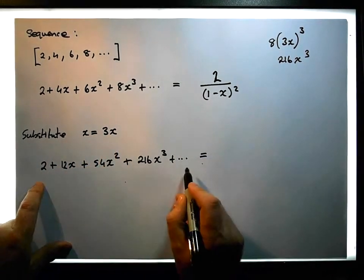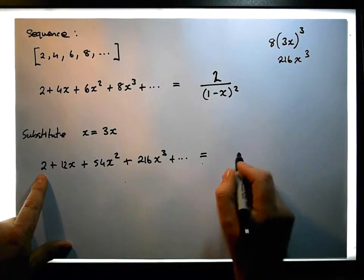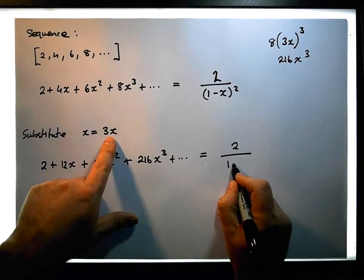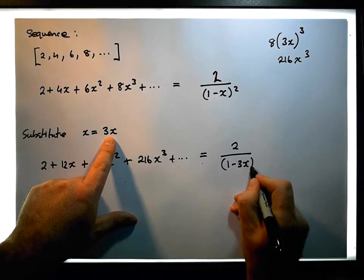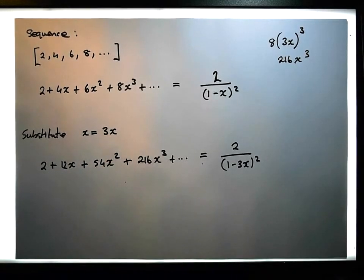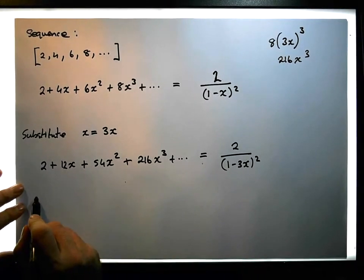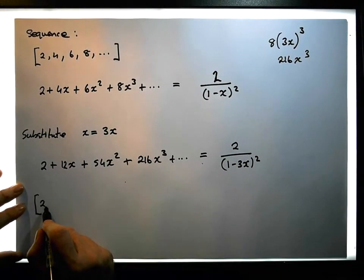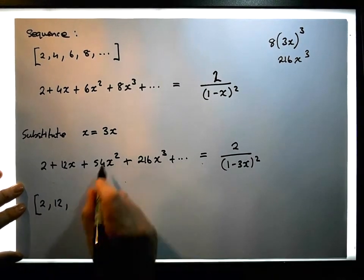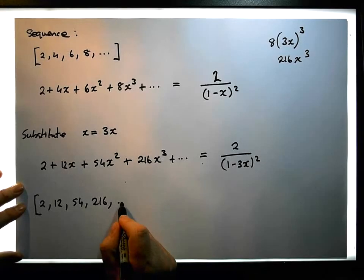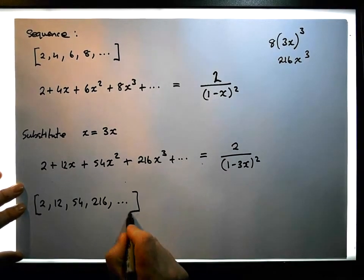So the generating function for this particular power series is effectively 2/(1-3x)². The sequence that this encodes is 2, followed by 12, followed by 54, followed by 216, and so on.